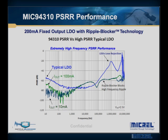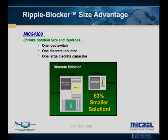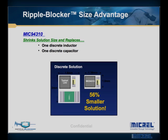Not only does this technology solve the issue of excessive ripple voltage, but it also solves the issue of limited board space. In comparison to a discrete solution, Micrell's MIC 94300 saves you up to 63% in board space area, and up to 56% of board area savings with our MIC 94310. This enables you to have more board real estate to accommodate your full feature design.